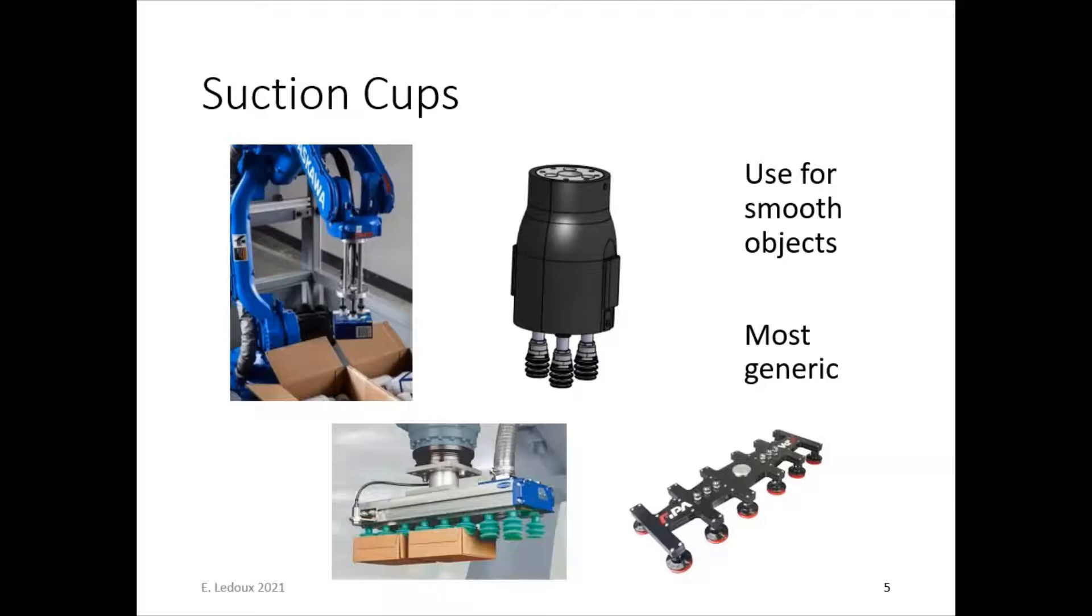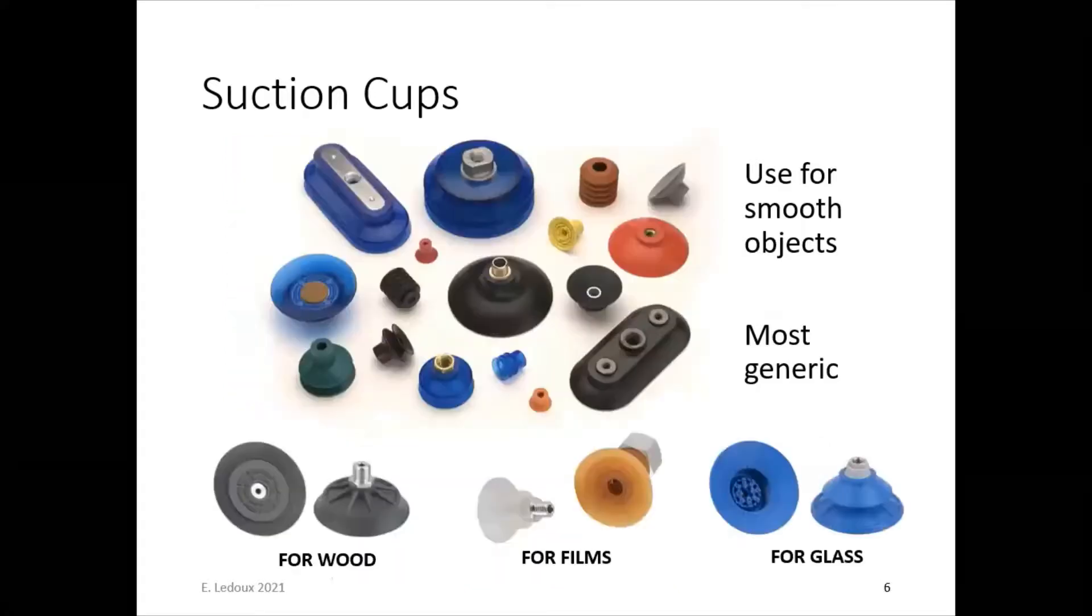And the suction cups can be used either just one giant cup, or they could be combined into different patterns or shapes in order to pick up objects of different sizes. You can even program it so that only certain suction cups will turn on at a time, depending on how large the object is that you're trying to pick up. These pictures show some examples of ways that a robot could use a suction tool.